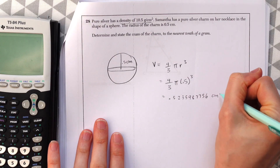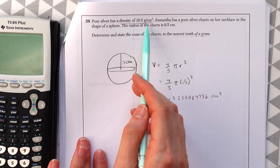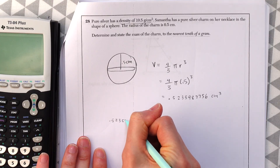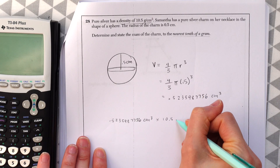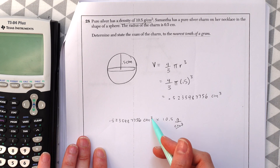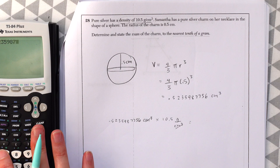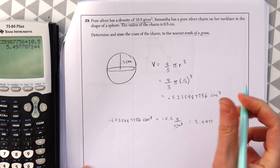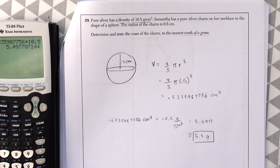That's in centimeters cubed, but we want the mass in grams. Using the density as a conversion rate, we multiply our volume by 10.5 grams per centimeter cubed — the units cancel and we're left with grams. Multiplying 0.5236 by 10.5, we get approximately 5.5 grams. That's our answer.